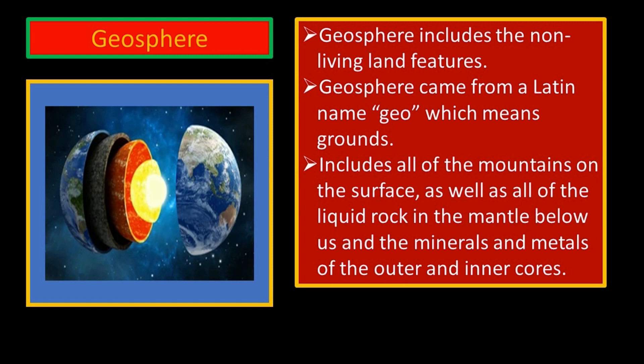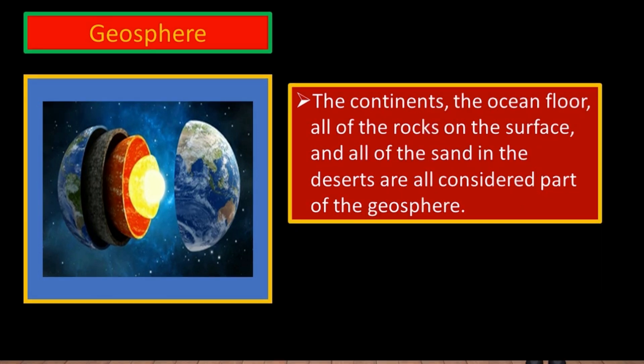The geosphere includes all of the mountains on the surface, as well as all of the liquid rock in the mantle below us, and the minerals and metals of the outer and inner cores. The continents, the ocean floor, all of the rocks on the surface, and all of the sand in the deserts are all considered part of the geosphere. Basically, if it looks like solid ground, it's part of the geosphere.